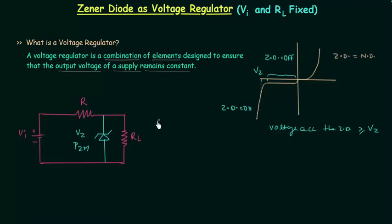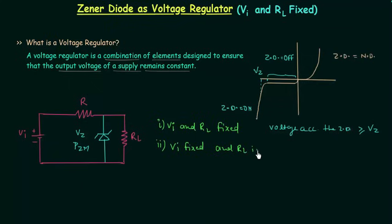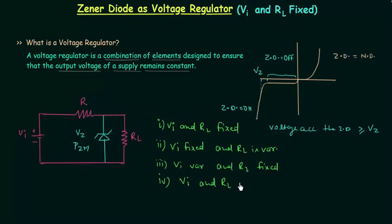Depending on VI and RL, we have four cases. In the first case, VI and RL are both fixed. In the second case, VI is fixed and RL is variable. In the third case, VI is variable and RL is fixed. In the last case, both VI and RL are variable. In this lecture I will explain the first case when VI and RL are fixed.